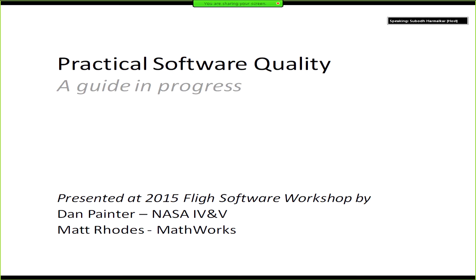Hello everybody. We're the last ones between you and lunch — we'll try and make up some time. My name is Matt Rhodes. I'm an application engineer at MathWorks. With me today is Dan Painter from NASA IV&V. So today what we have for you is a bit of a glimpse at something we're working on: a practical guide to software quality planning.